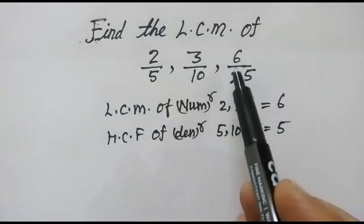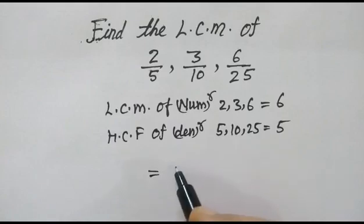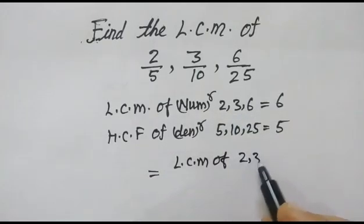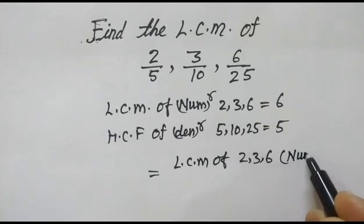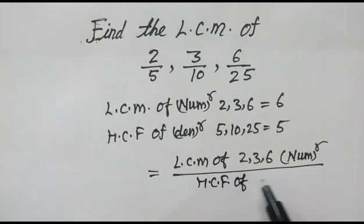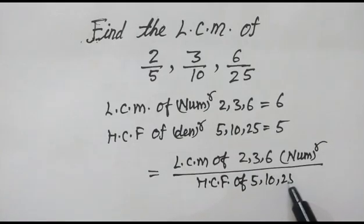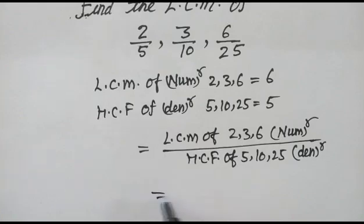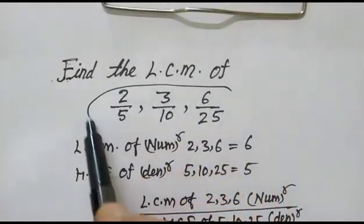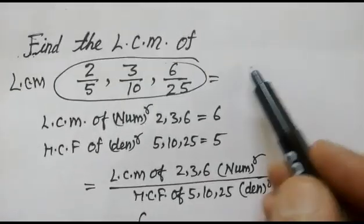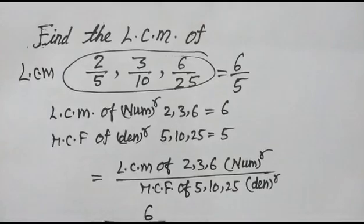Now we find the LCM of these fractions using the formula: LCM of fractions = LCM of numerators over HCF of denominators. So LCM is 6 and HCF is 5, therefore the LCM of these fractions will be 6/5. Ok friends, thank you.